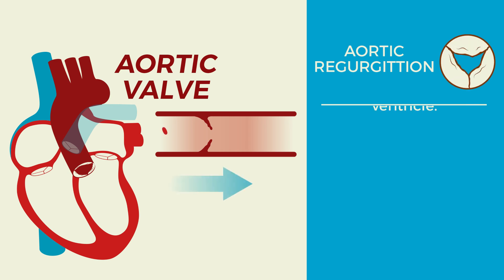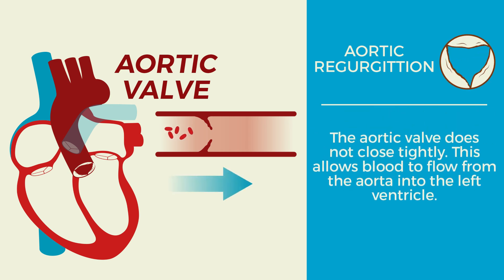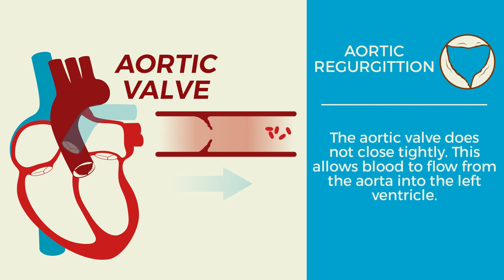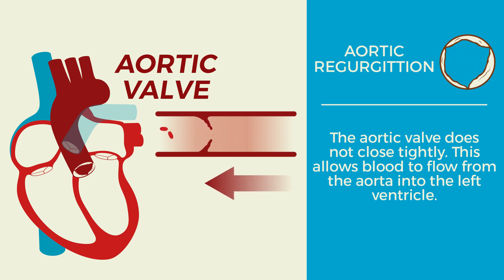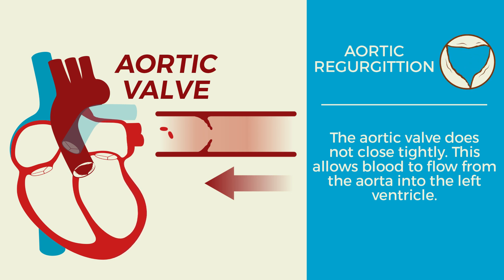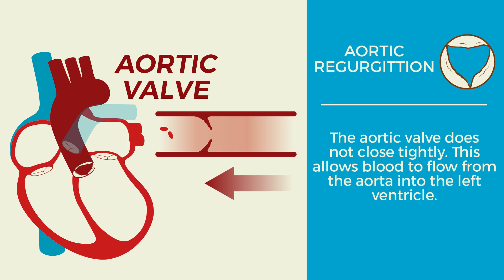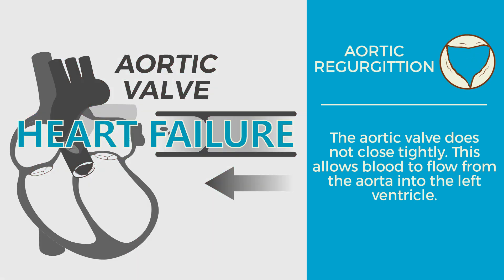In aortic regurgitation, the valve is leaky. The heart pumps blood into the aorta, but some of the blood goes back into the heart through the leaky aortic valve. Over time, this extra blood that leaks back causes stretching of the heart, and this too ultimately leads to heart failure if left untreated.